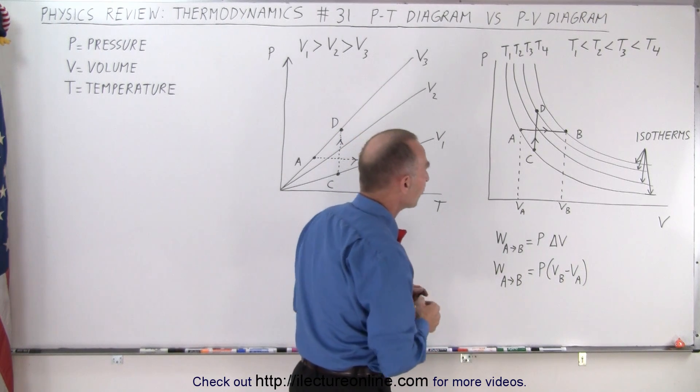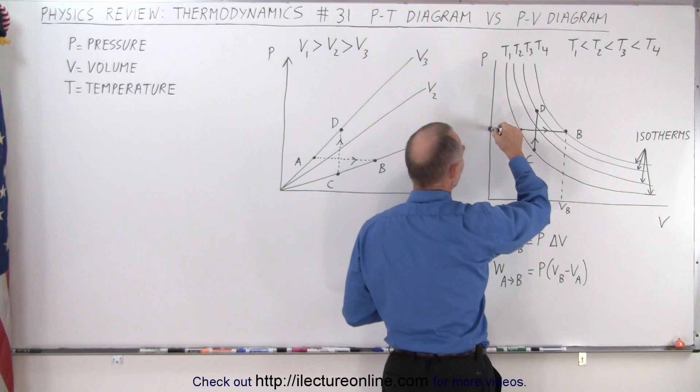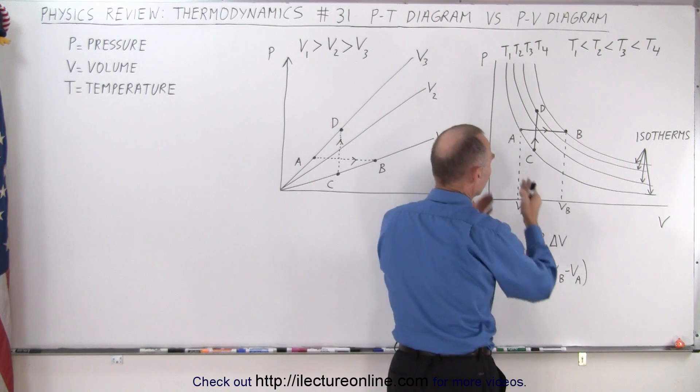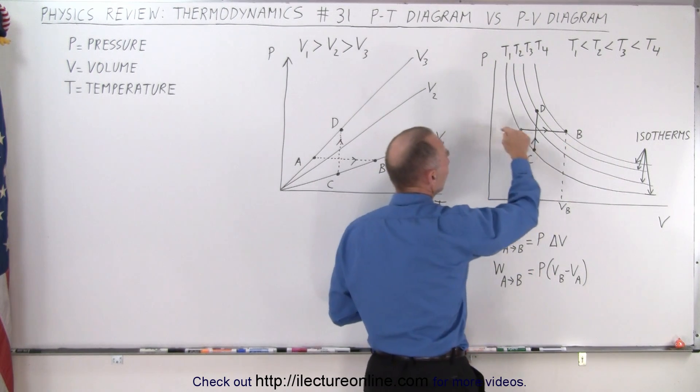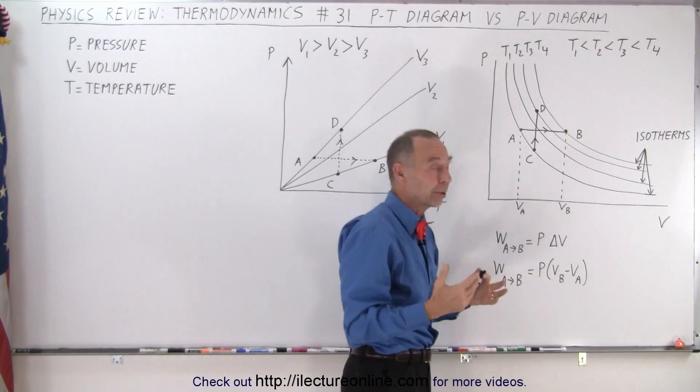So let's say we move from point A to point B. Point A has a particular pressure, volume, and temperature. Now we move to point B, so the gas is in a different state now. What has changed? Notice the pressure has not changed, so it's called an isobaric process.